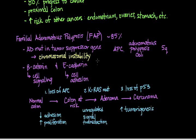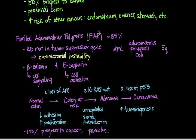Unlike HNPCC where 80% of patients progress to cancer, with familial adenomatous polyposis 100% of patients will progress to colorectal cancer. The location is also different — in FAP, the lesions are pan-colonic, involving the whole colon as well as the rectum. These two pathways are great examples of the hallmarks of cancer: one involves a mutation in a DNA mismatch repair gene leading to microsatellite instability, while the other involves a mutation in a tumor suppressor gene leading to chromosomal instability.